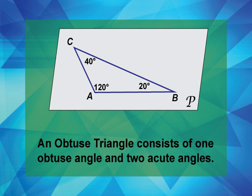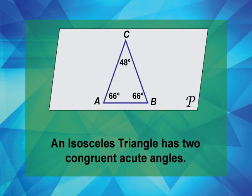Now let's look at some special triangles based on angles. An isosceles triangle has two congruent acute angles. Congruent angles have the same angle measure. This is an example of an isosceles triangle. See the two congruent angles?